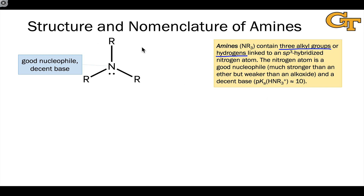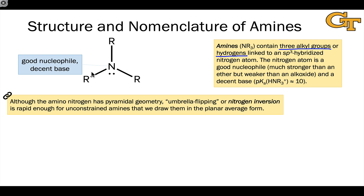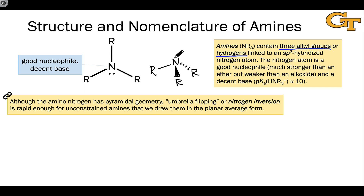Amines are stronger than ethers because nitrogen is less electronegative than oxygen, but certainly weaker than alkoxides, which have a negative charge. Amines are typically drawn with three solid lines to the R groups, which seems to imply a trigonal planar geometry. This doesn't really jive with VSEPR theory — we should expect amines to have a pyramidal geometry since the nitrogen has four electron groups around it.